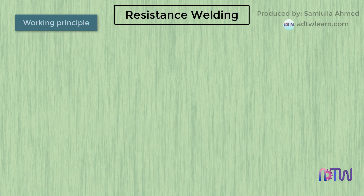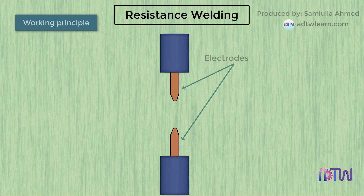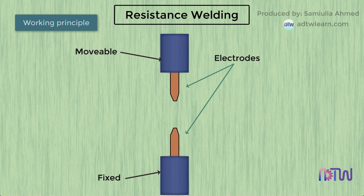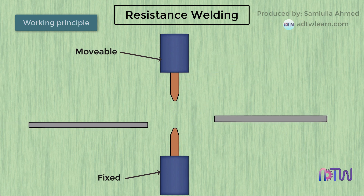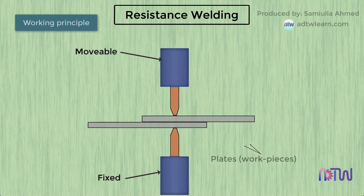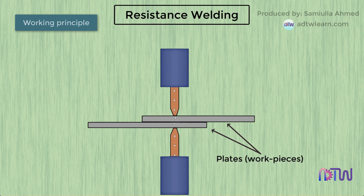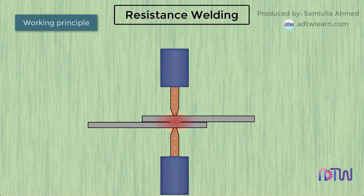Working principle: The welding electrodes are made up of copper, which is a good conductor of electricity. The movable and fixed electrodes of the spot welding machine are held in pressure on either side of a pair of plates to be welded together. As the current passes, it experiences resistance between the electrode and workpiece contact and generates heat. This heat causes the interface of the workpiece in contact with another workpiece to melt, and pressure fuses the two metals, forming a solid bond.